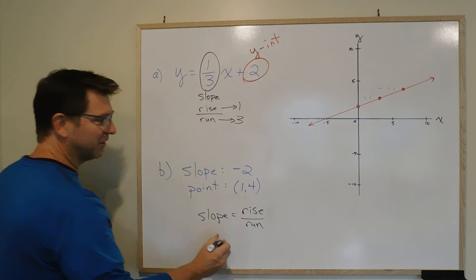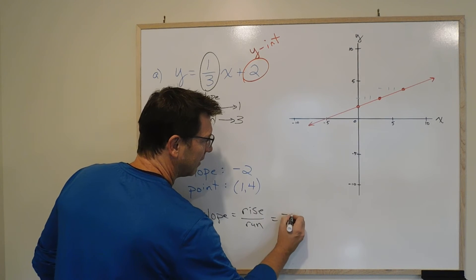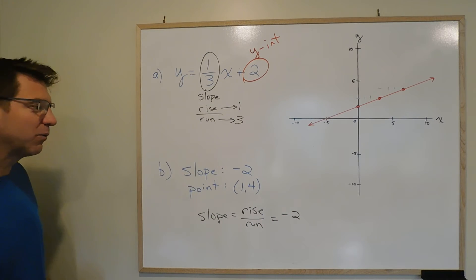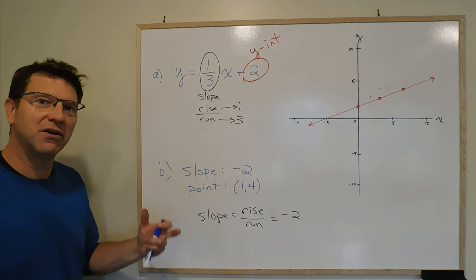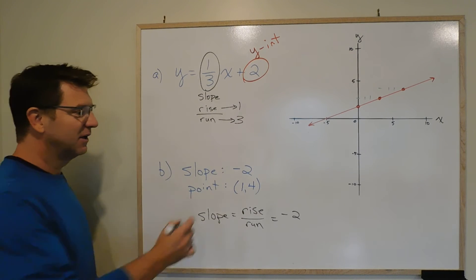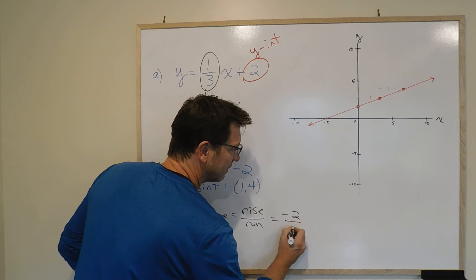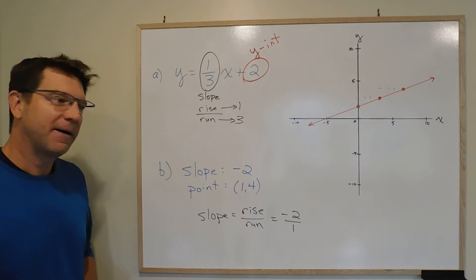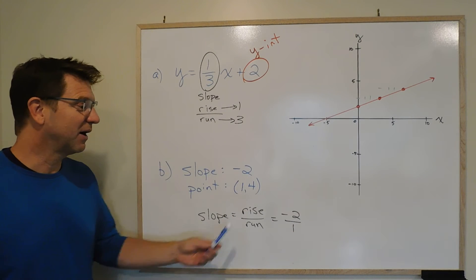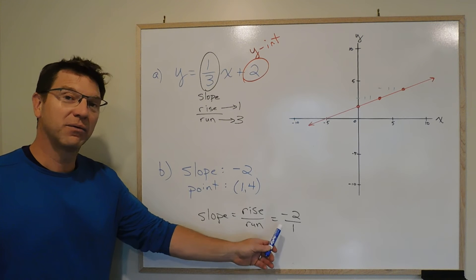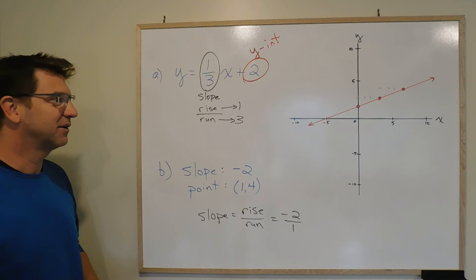But it just says slope is negative 2, negative 2. But remember, we can always make an integer into a fraction, and slope is a fraction. If we don't have a fraction, we can put it over 1. That makes it a fraction. So the rise is negative 2 over the run of 1. So that's the one thing we needed to do.